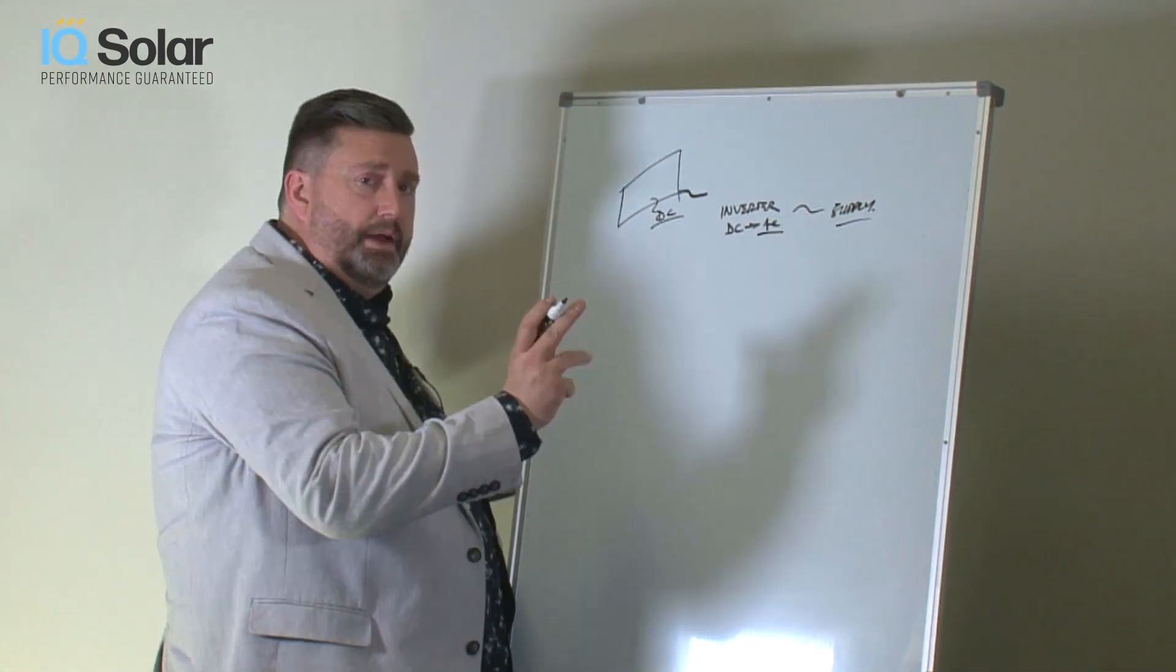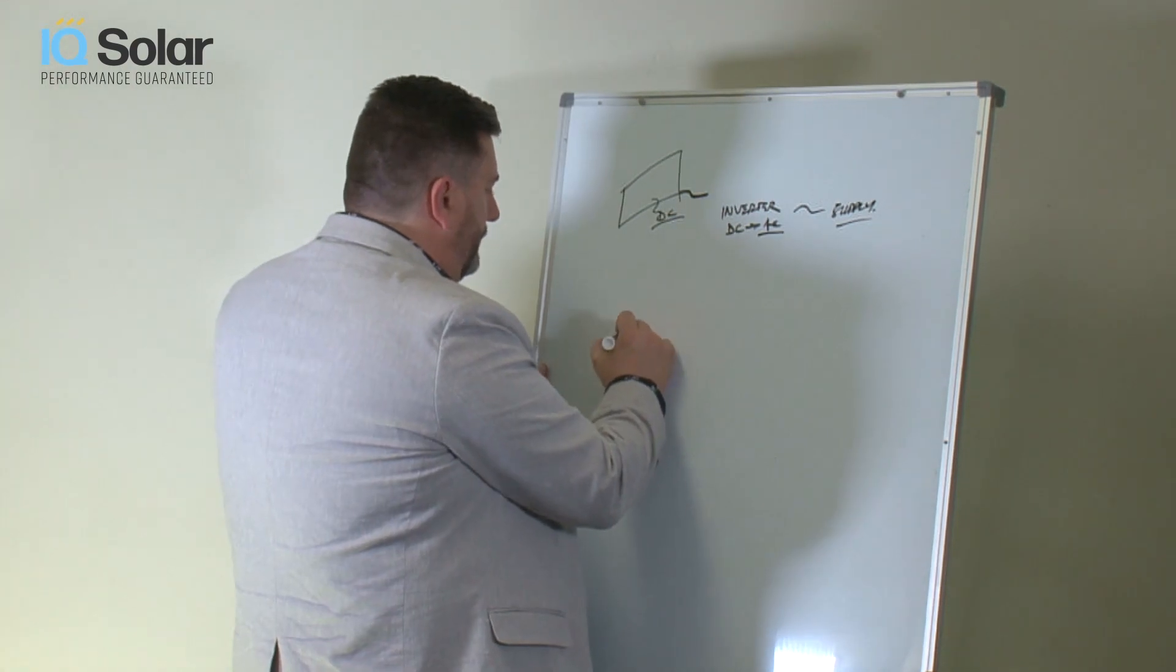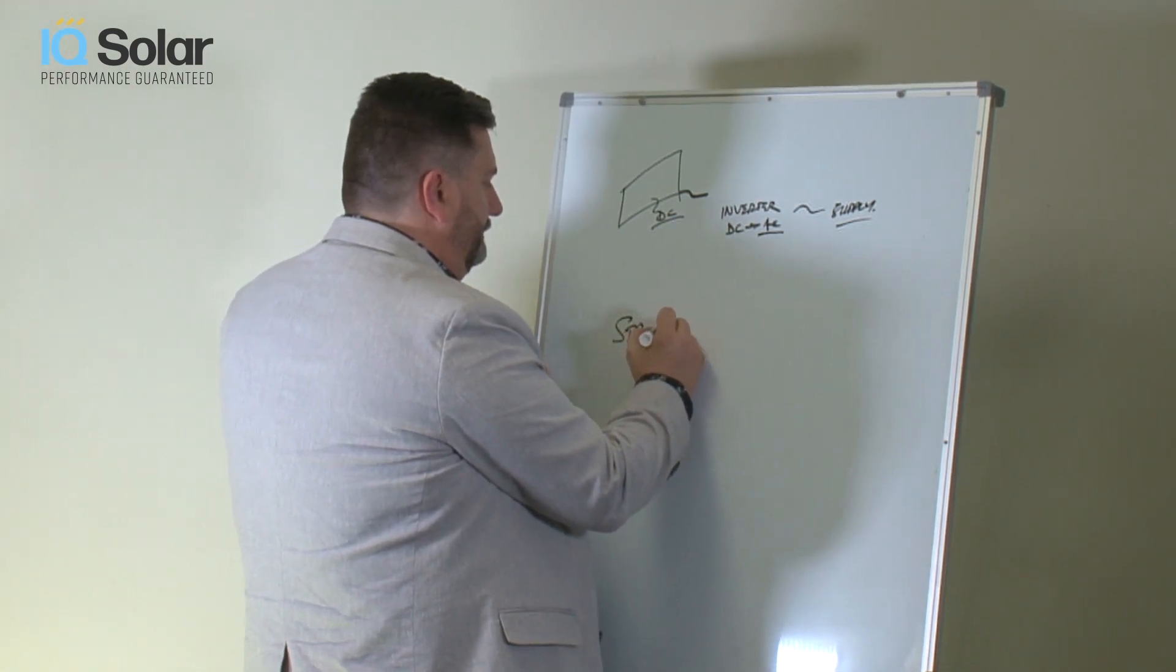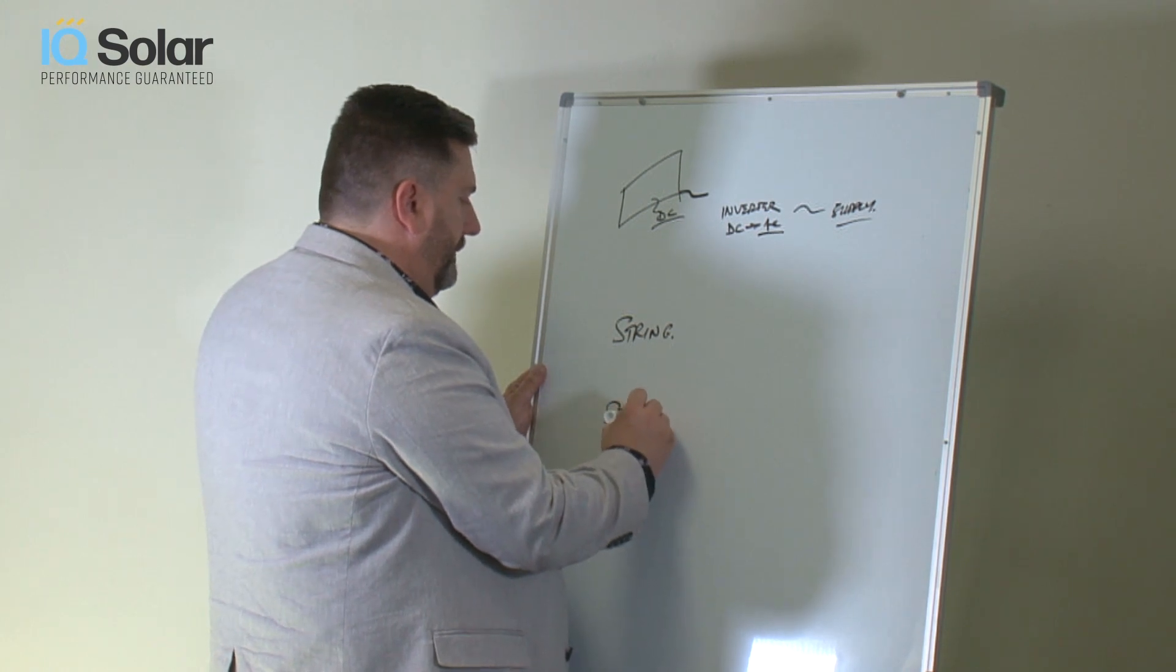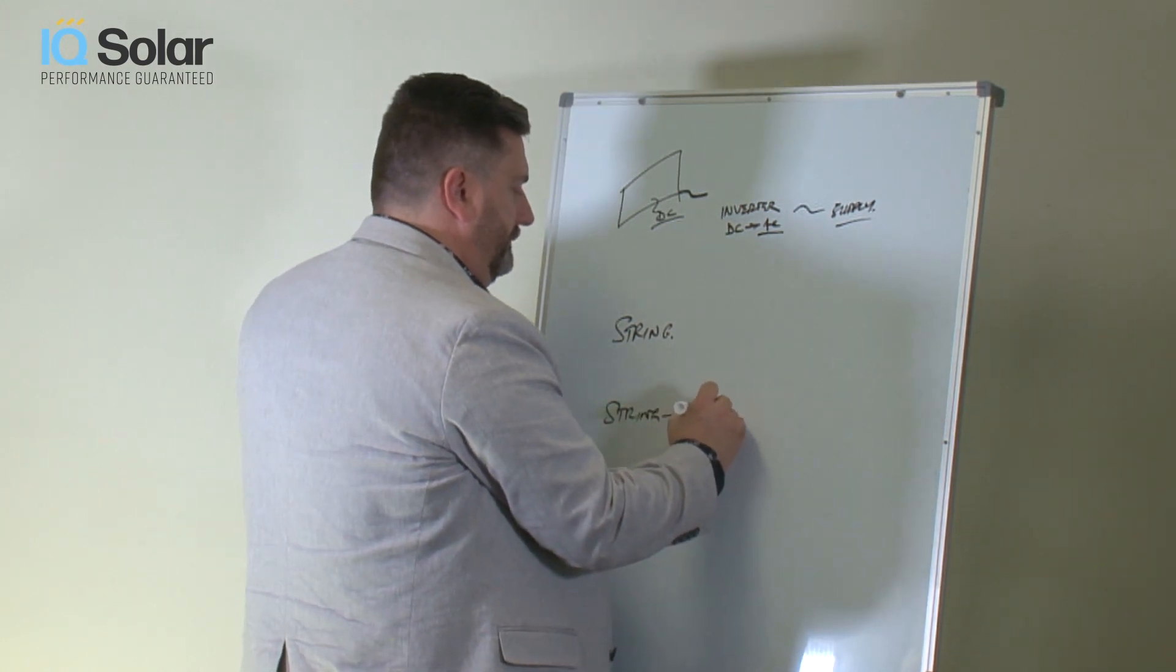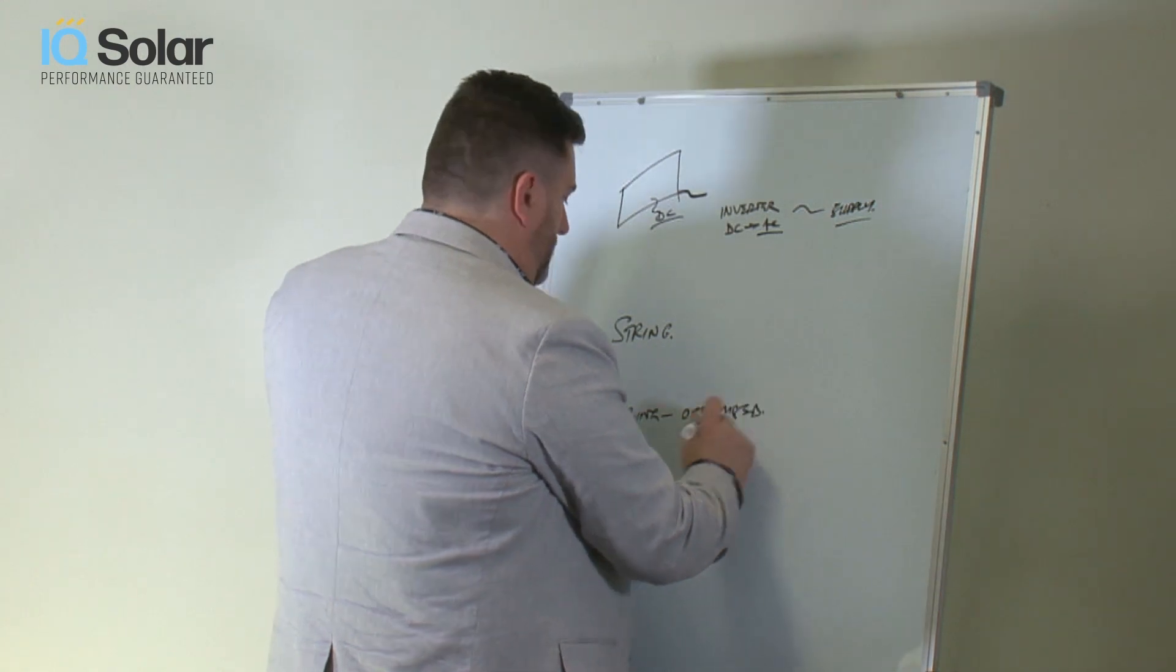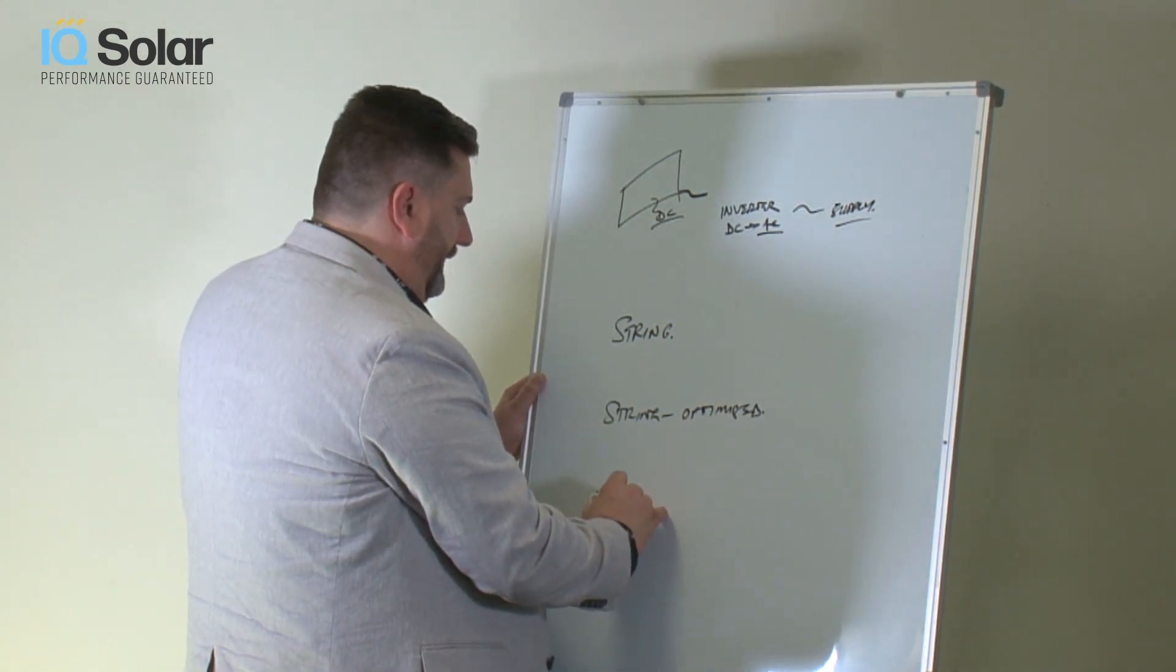So there's three scenarios. One is what we call a string inverter. Second is called string optimized. And the third is what's called a microinverter.